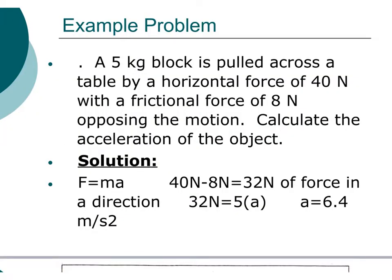Here, a 5 kilogram block is pulled across a table by a horizontal force of 40 newtons, with a frictional force of 8 newtons opposing motion. We want to calculate the acceleration. Since F = ma, the net force is 40 minus 8 equals 32 newtons. With mass of 5 kg, our acceleration is 6.4 meters per second squared.